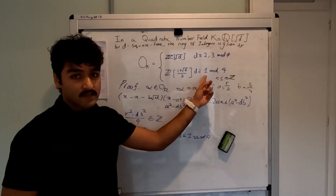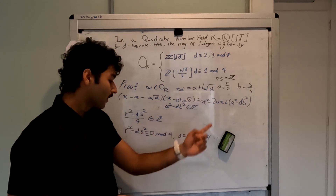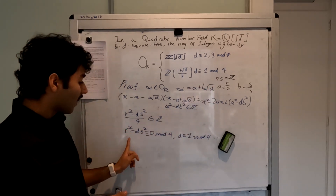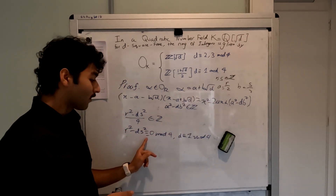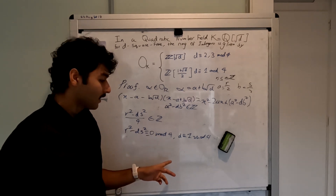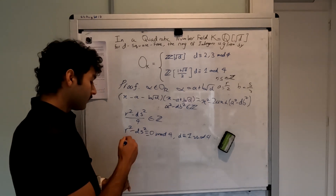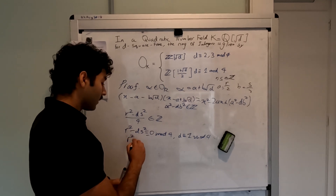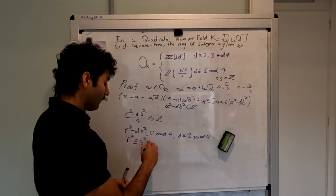Now, in the second case, when d is congruent to 1 mod 4, we require r squared minus ds squared to be congruent to 0 mod 4, as before. And since d is congruent to 1 mod 4, this is equivalent to r squared congruent to s squared mod 4.